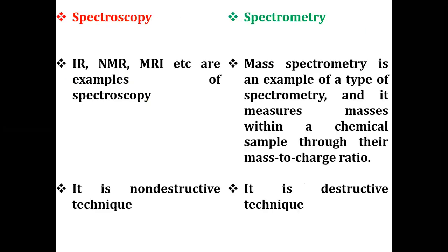Examples of spectroscopy include infrared (IR) spectroscopy, nuclear magnetic resonance (NMR), and magnetic resonance imaging (MRI). The primary example of spectrometry is mass spectrometry, which measures mass within a chemical sample through the mass-to-charge ratio of the ions produced.